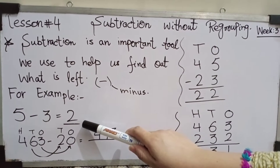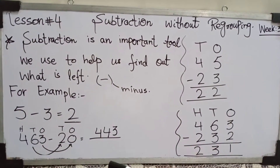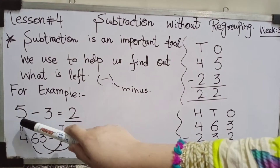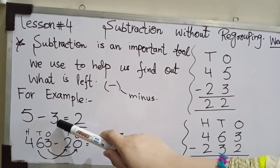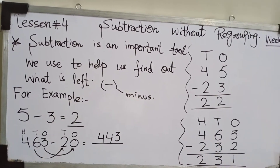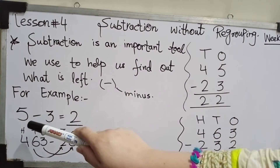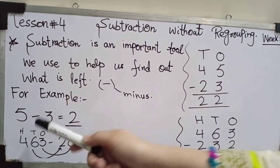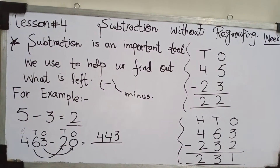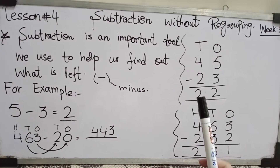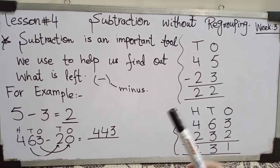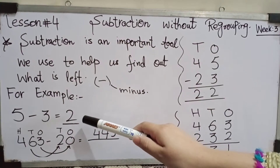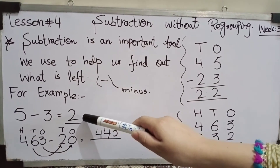First, the question is in horizontal form — آپ نے یہ horizontal form میں write کیا ہے۔ We have 5 minus 3 — آپ نے 5 میں سے 3 کو subtract کرنا ہے۔ For example، there are 5 ladybirds اور 3 ladybirds fly away ہو جاتی ہیں — how many are left? کتنی ladybirds پیچھے رہ جائیں گی؟ 2.